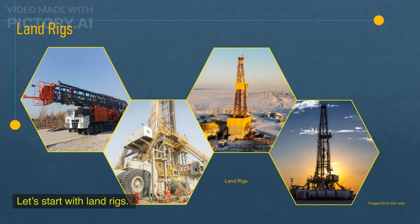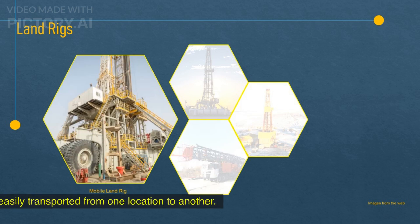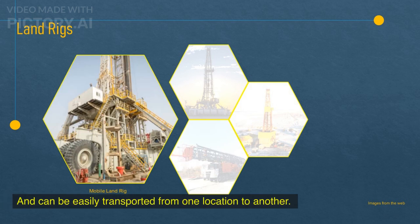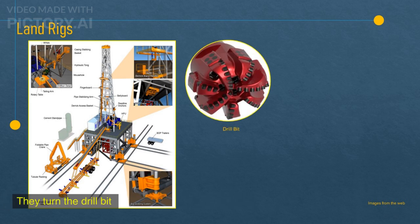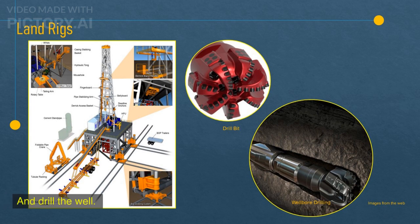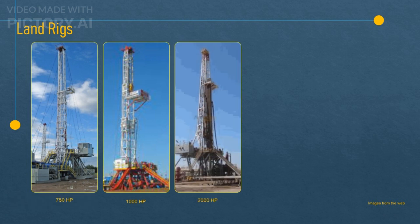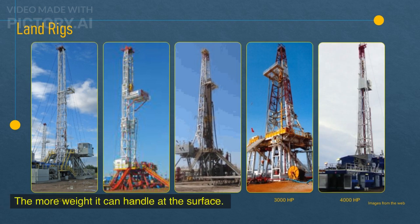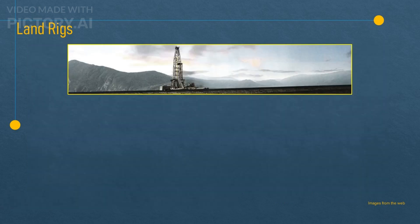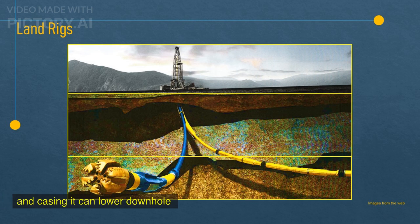Let's start with land rigs. Land rigs are drilling rigs that work on land. Some are mounted on trucks and can be easily transported from one location to another. Land rigs have similar components and functions — they turn the drill bit and drill the well. The main differences between land rigs are the horsepower and the depth they can drill to. The more horsepower a rig has, the more weight it can handle at the surface. The more depth a rig can drill to, the more drill pipe and casing it can lower down.